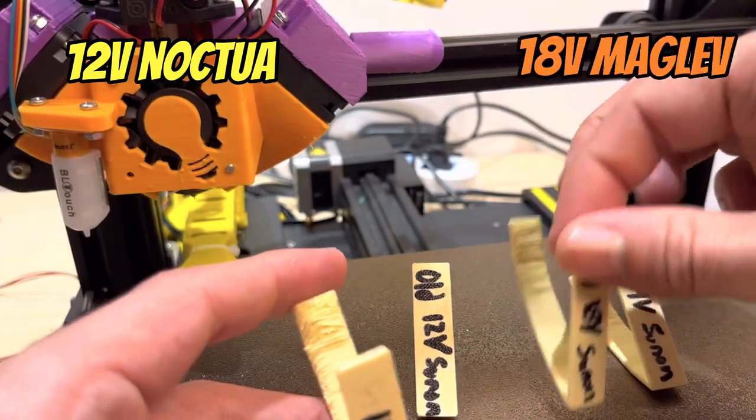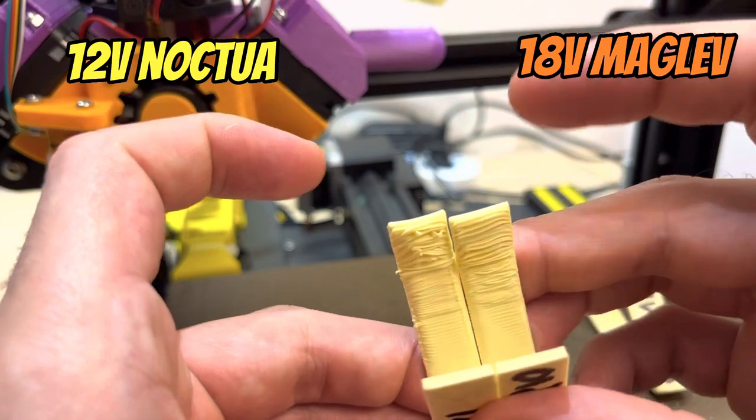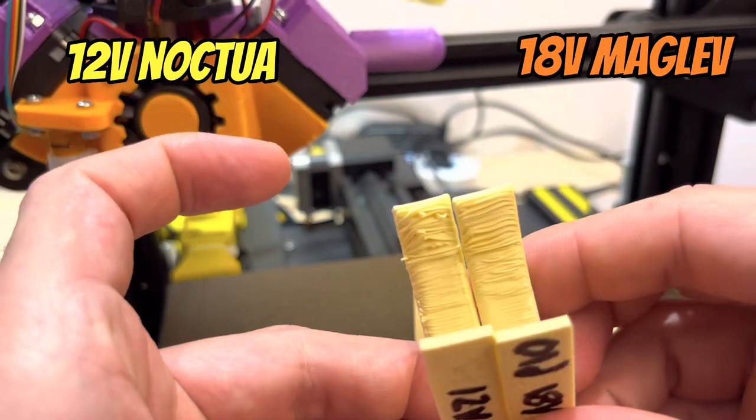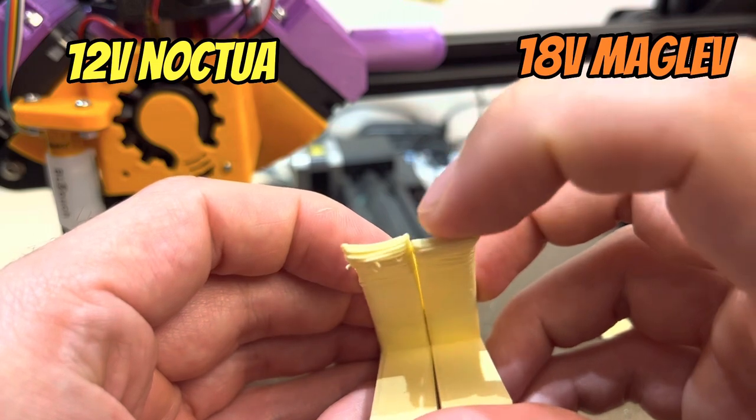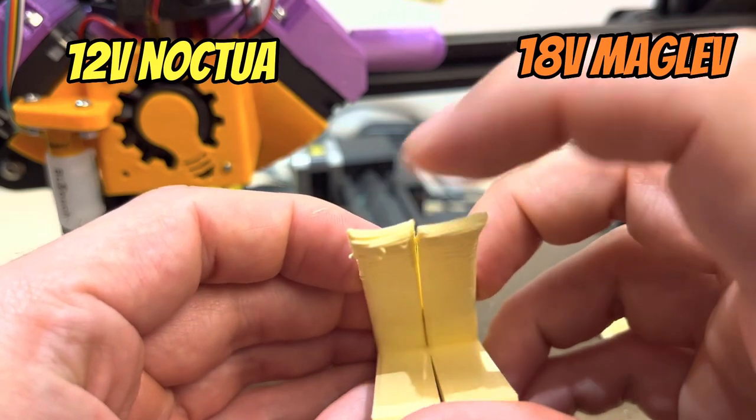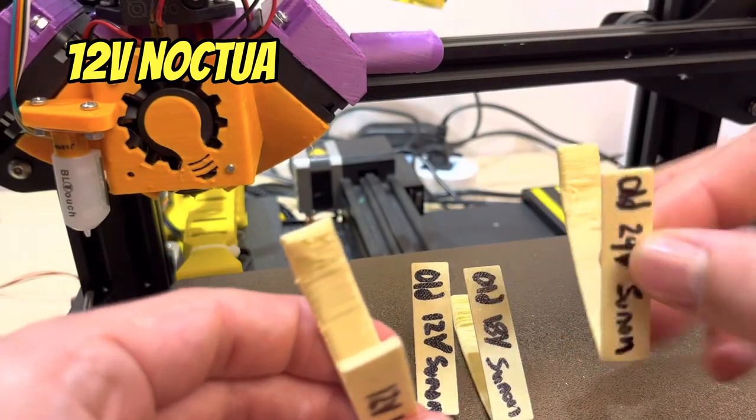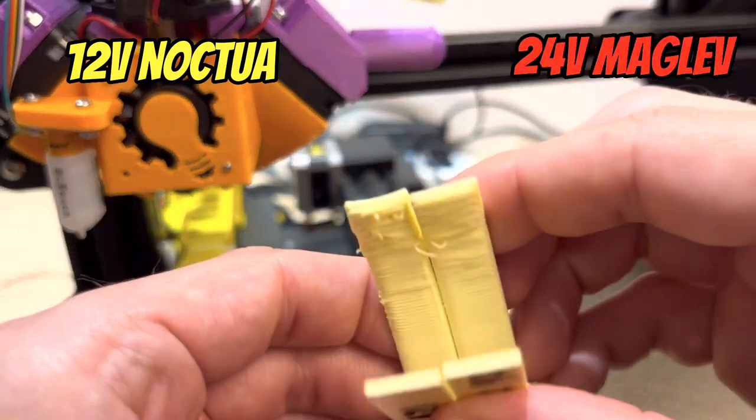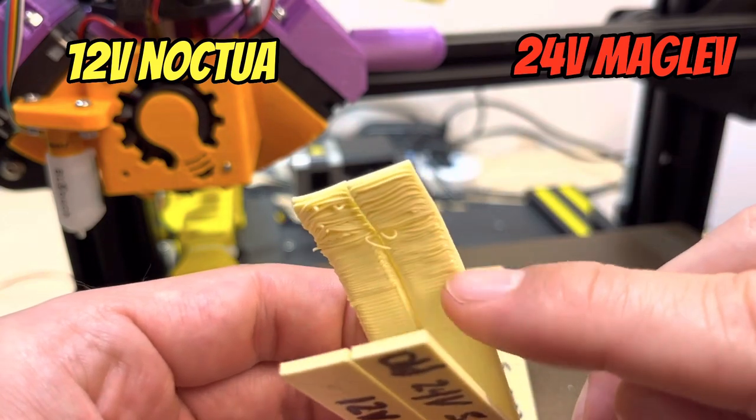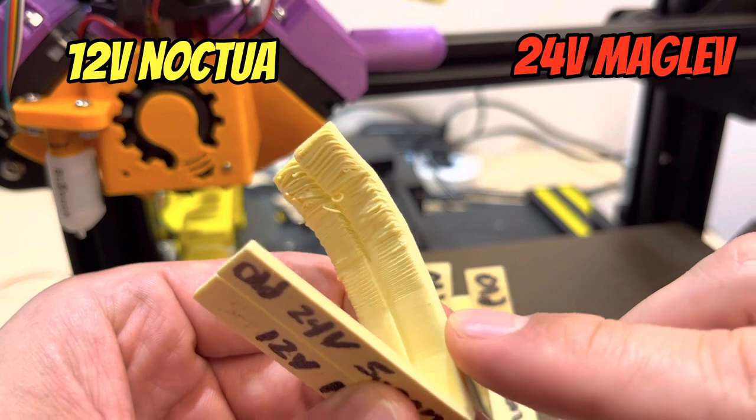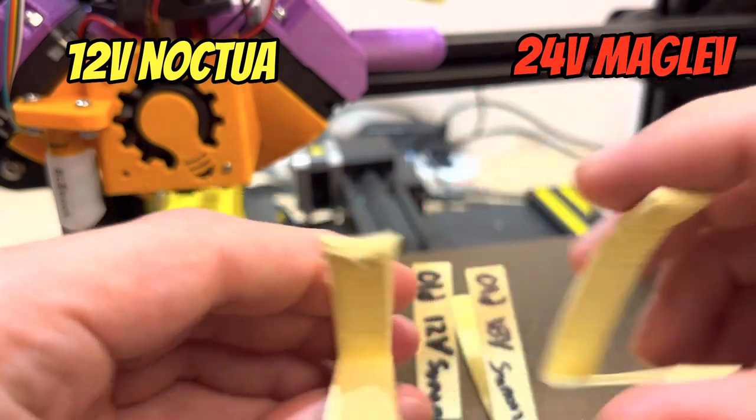Next I turned the maglev fan up to 18 volts. Let's see how that compares with the Noctua. It's a little bit smoother but not too much of a noticeable difference. You can see at the top here the part is not curling as much. On this Noctua one the corners are curling quite a bit. Now let's look at the results for 24 volts on the maglev fan. We can see here things are definitely getting smoother, looking a lot better than the original. But I think there's still a lot of room for improvement, so we're going to take this up to the next level.